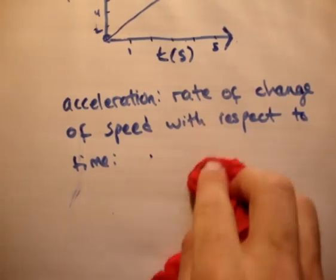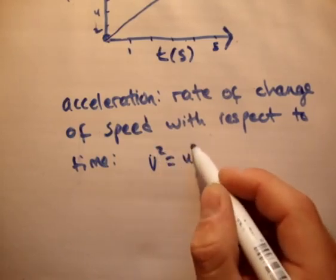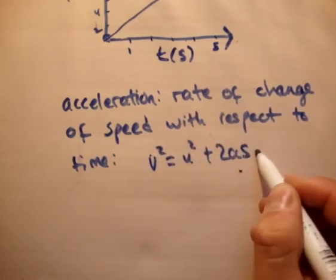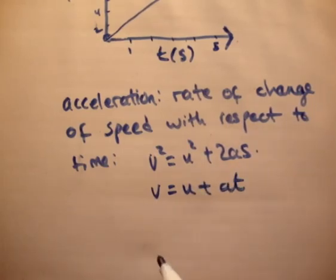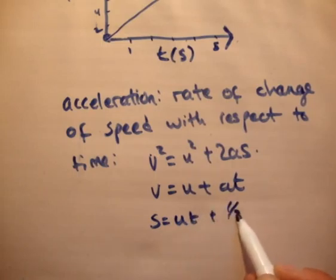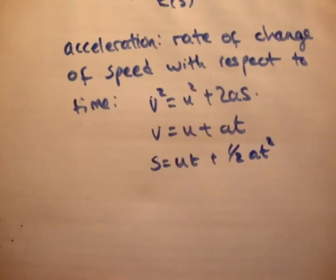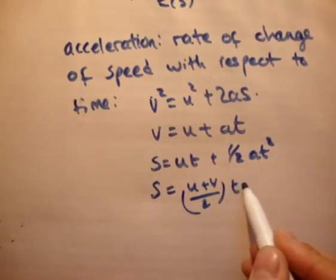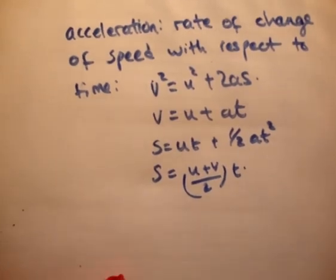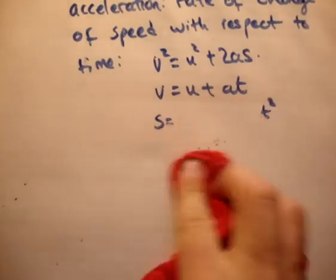If you look at our UVAST formulas, we have V squared equals U squared plus 2AS. We have V equals U plus AT. And we have S equals UT plus half AT squared. And we have S equals U plus V over 2 times T. So we're going to analyze this motion using those formulae.